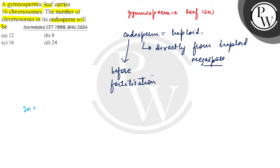The leaf is diploid, so the endosperm will have 8 chromosomes.